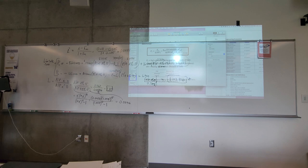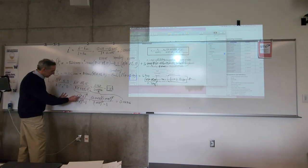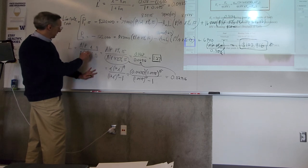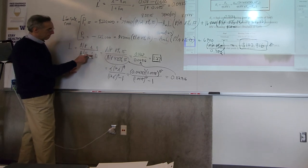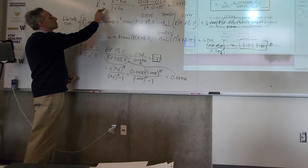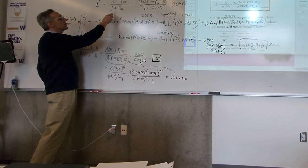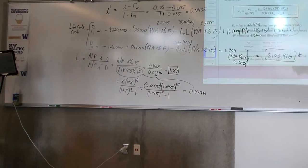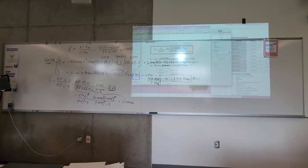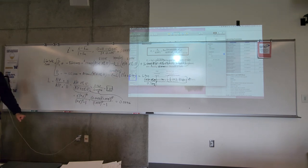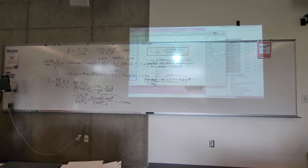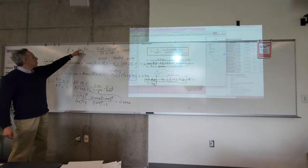A student asked how to get I' — specifically the A/P at 4.35%. The formula for I' is I' = (I - R_M) / (1 + R_M), where I is the discount rate and R_M is the escalation rate for maintenance. So it's the discount rate minus the escalation, divided by one plus the escalation.